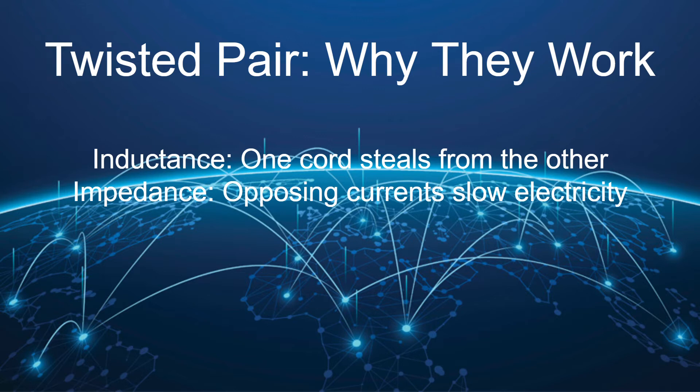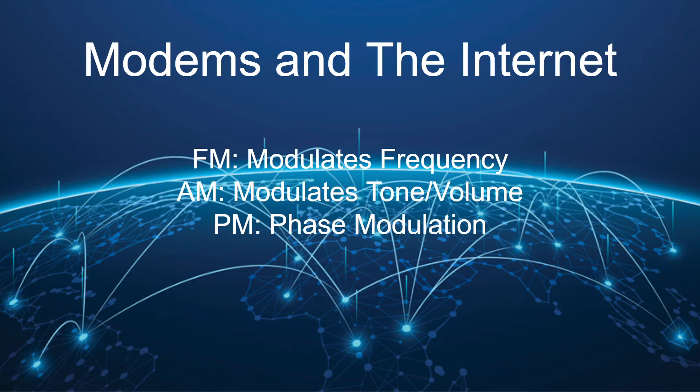There are two more words you need to know for twisted pair. Inductance is the ability of one electrical cord to steal electrons from another electrical cord. Impedance is when you have two opposing currents that slow electricity. When you twist the cords together, it eliminates both inductance and impedance. By the way, fiber optic cables have neither, because those phenomena don't apply to light.